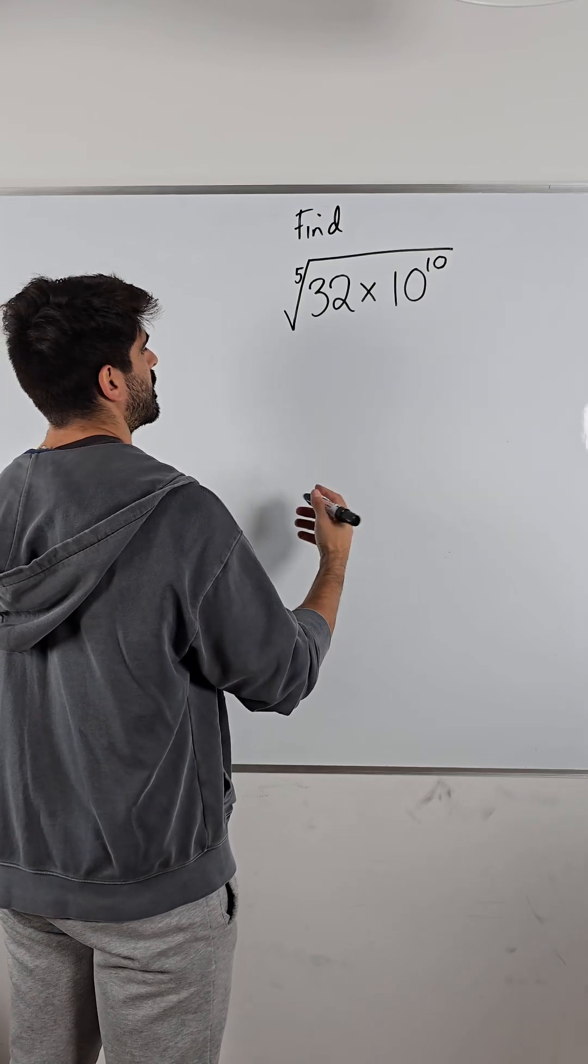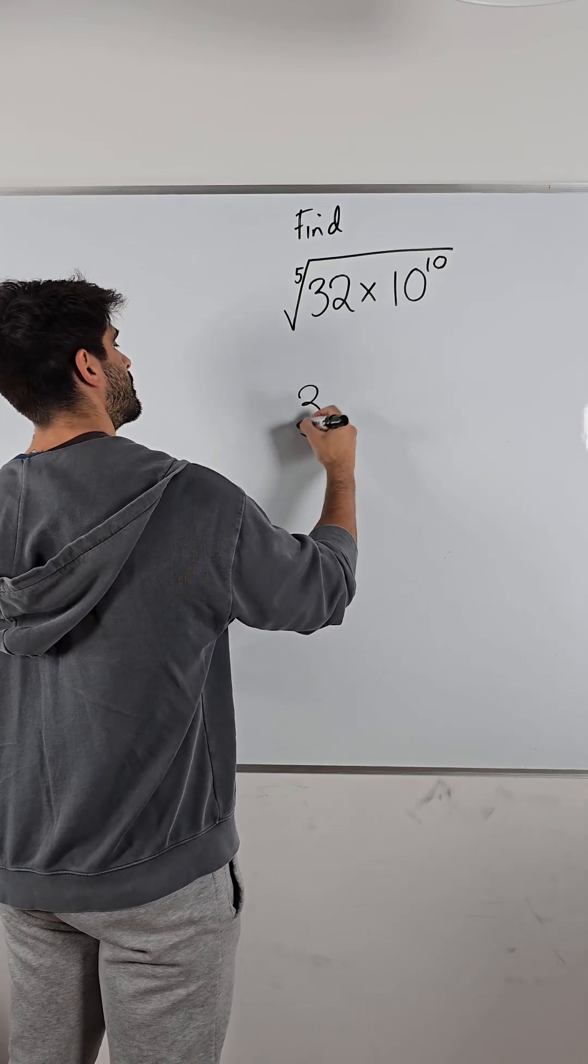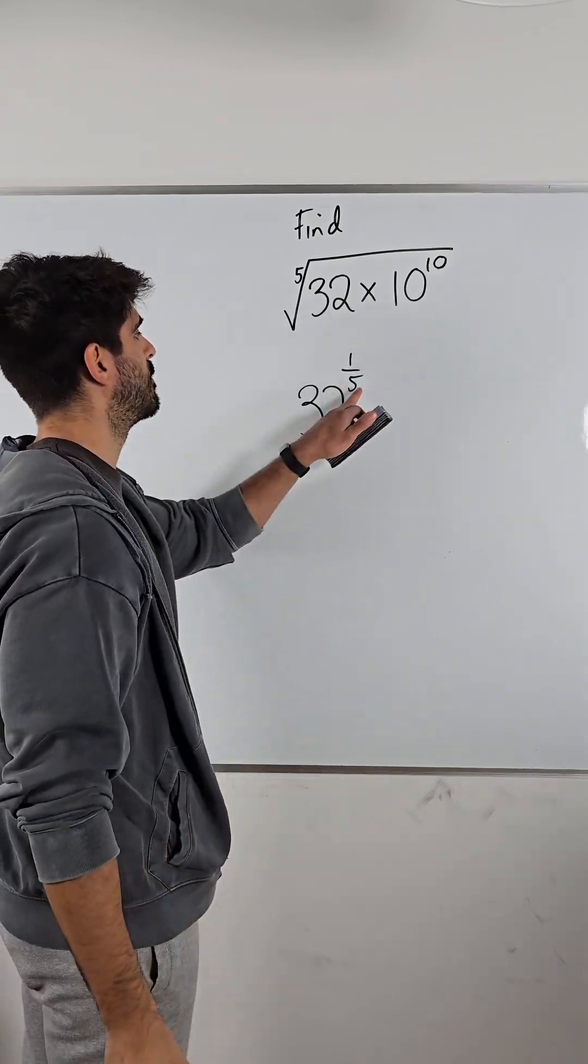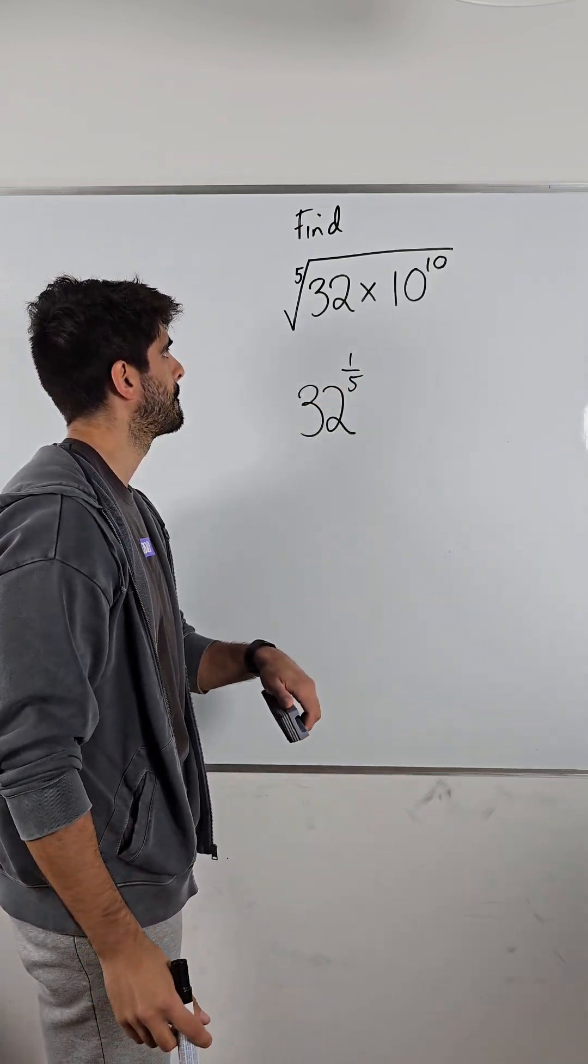Now, fifth root, if you remember, the power is not five, it's one over five. Remember, the denominator tells you which root you're taking.